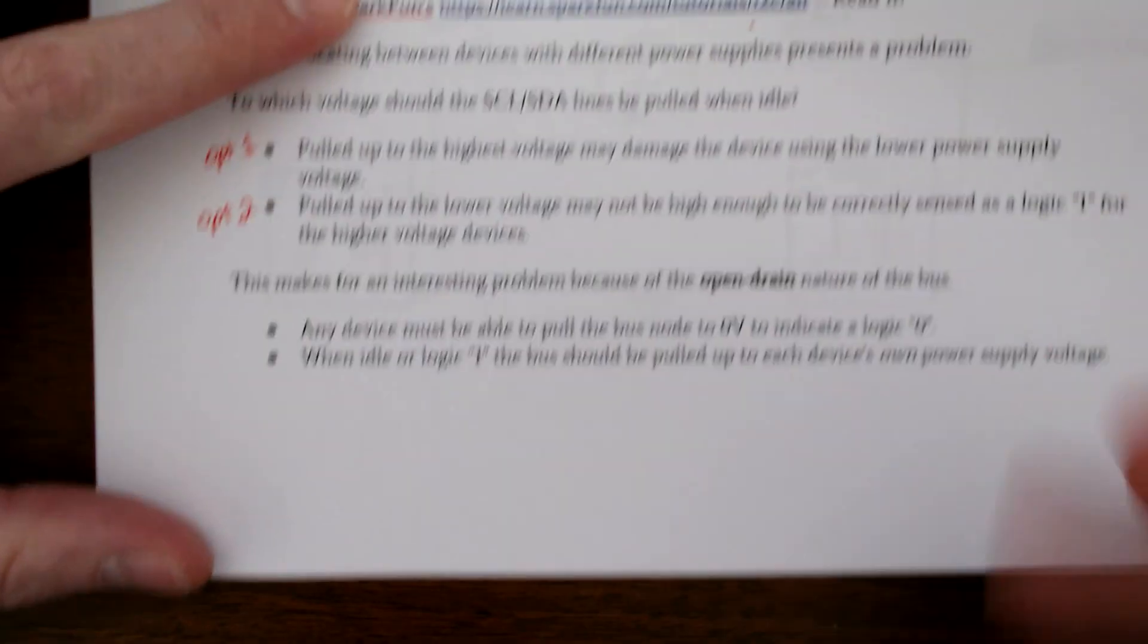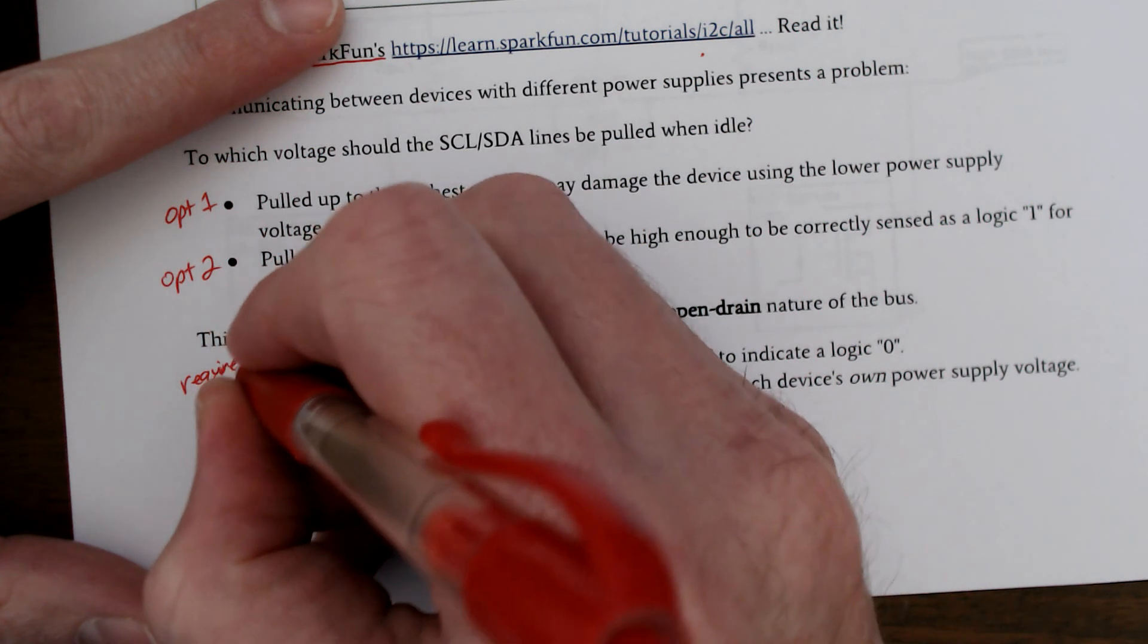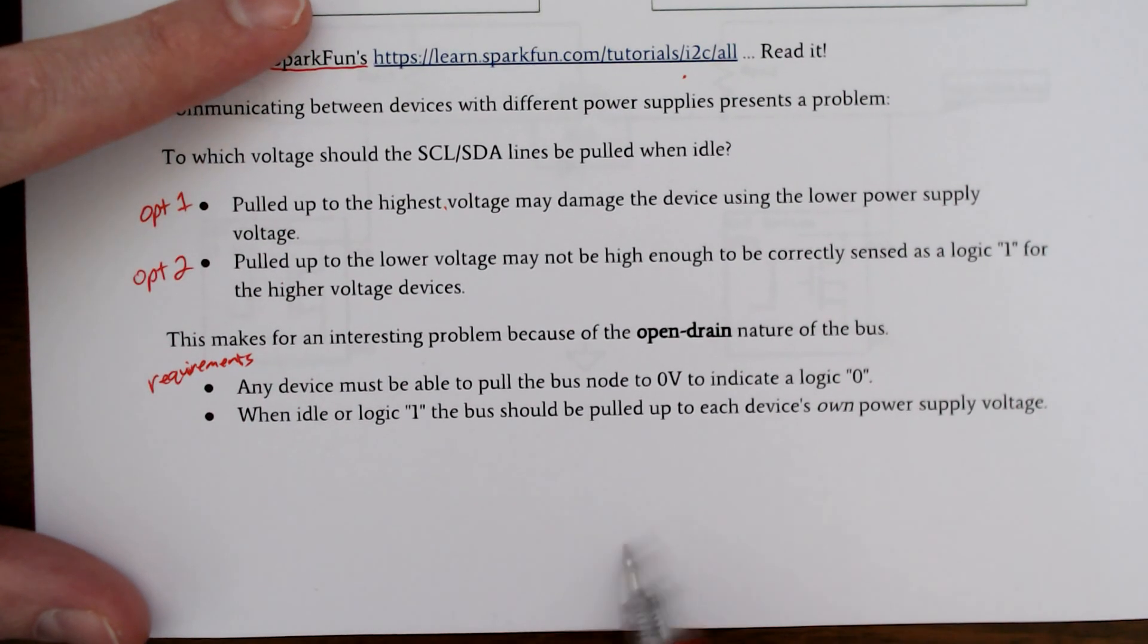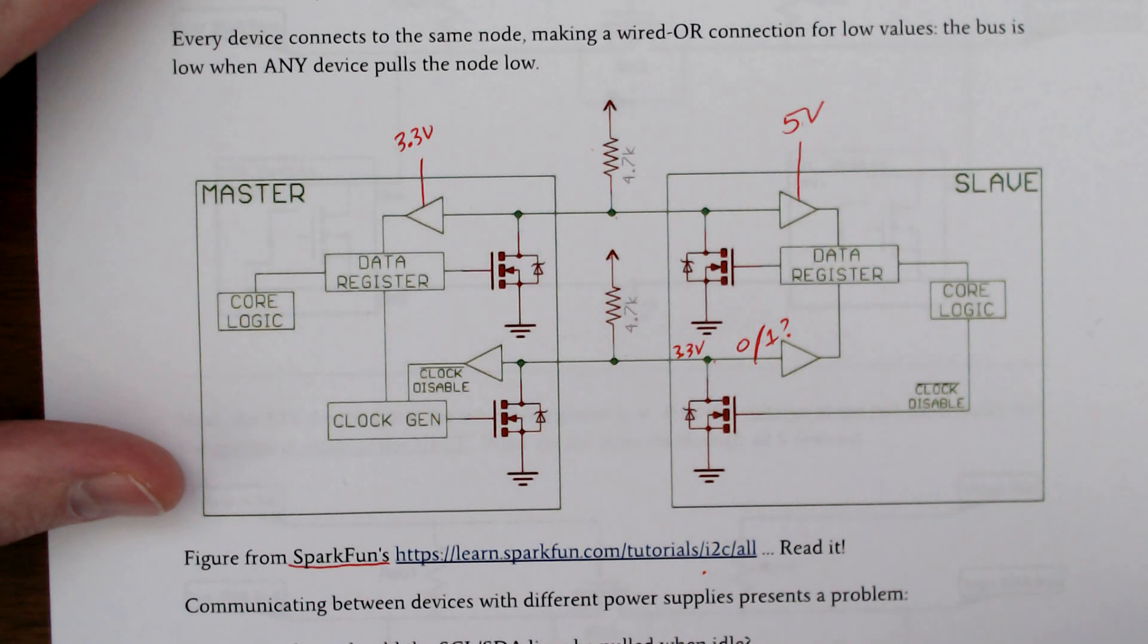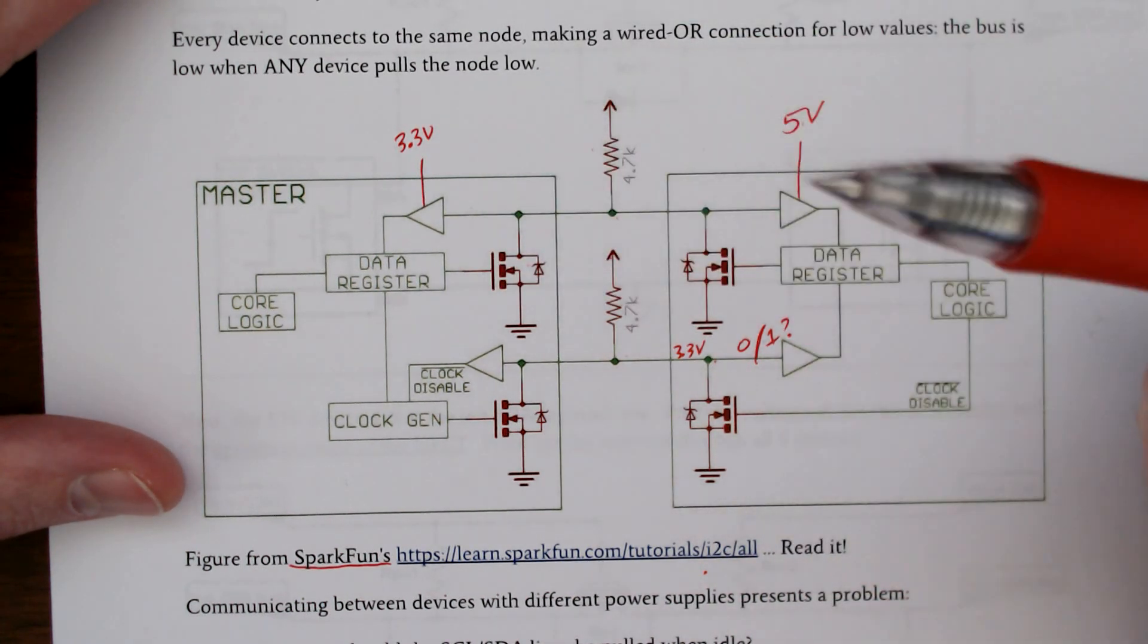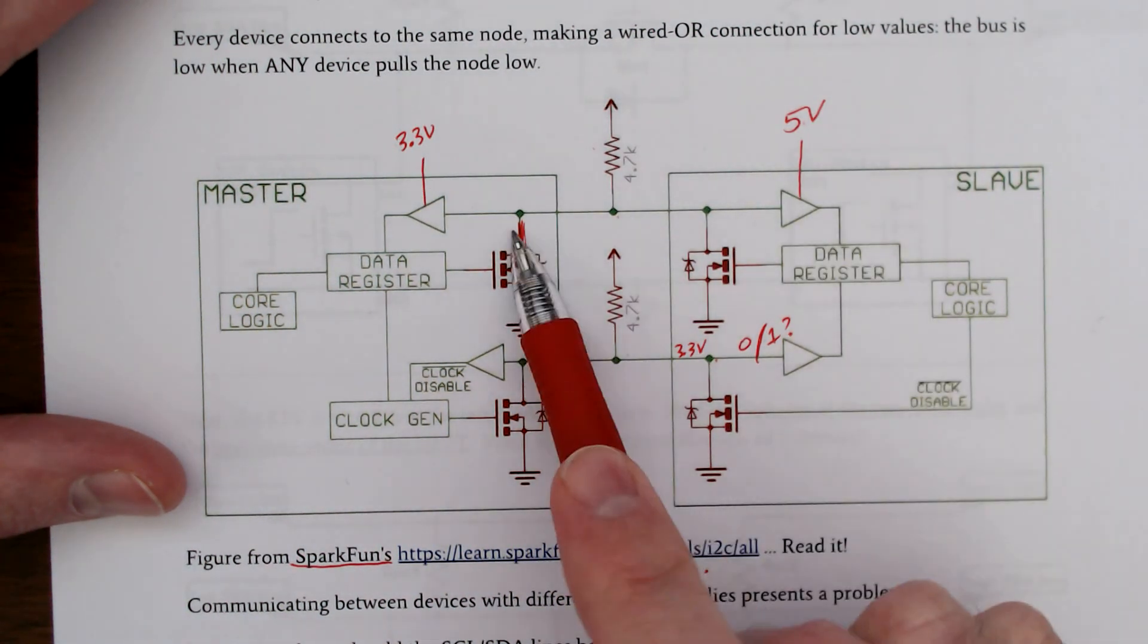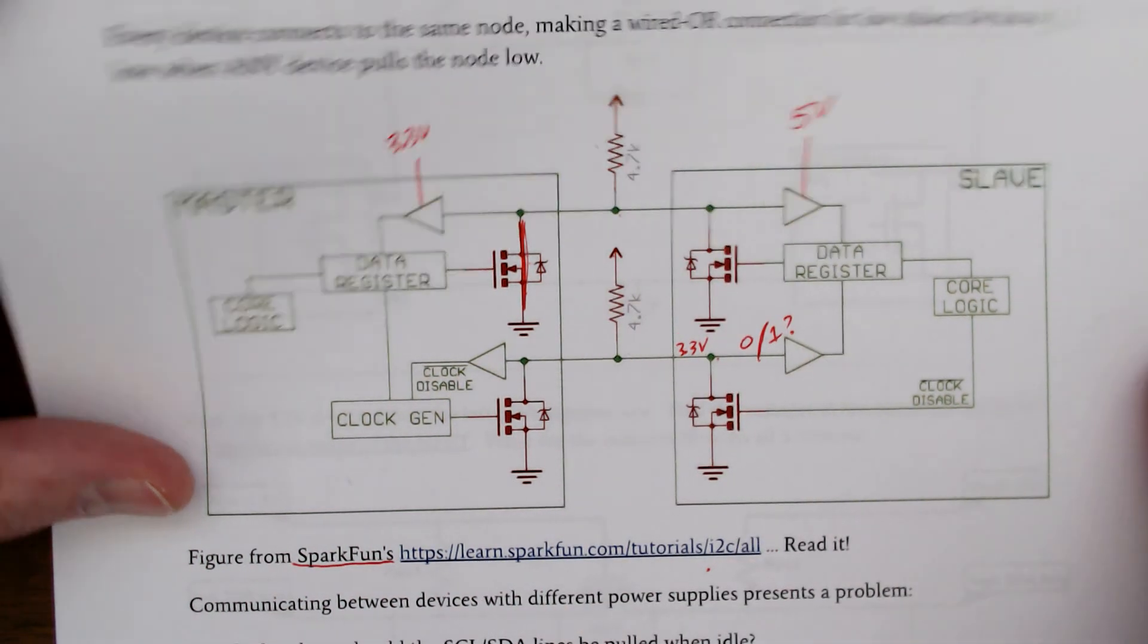All right, so we have this situation. These are requirements. Two requirements for I2C: any device must be able to pull the bus down to zero. That's really easy. Any of these MOSFETs that are turned on can do that. You switch this on, it becomes essentially a short circuit or a switch, pulls that bus down to zero.